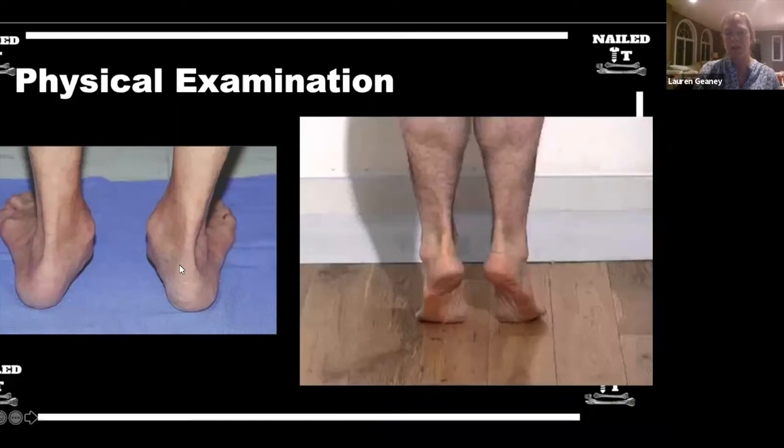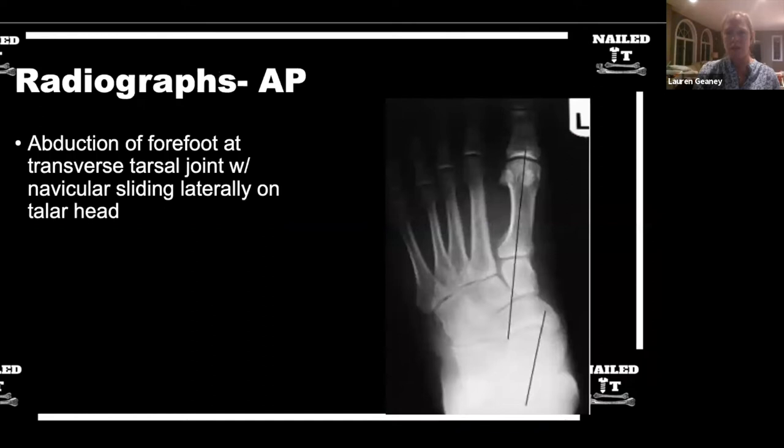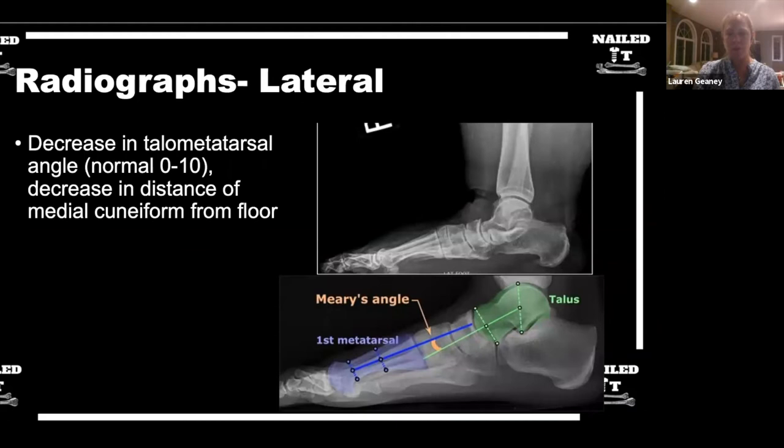So there are a lot of different angles that people talk about. The ones that I use most — really about three different things. On the lateral view, I use Meary's angle, or the talus first metatarsal angle. That's looking at the angle between the talar axis and the first metatarsal axis. Anything close to zero is normal, but zero to 10 degrees is really considered normal.